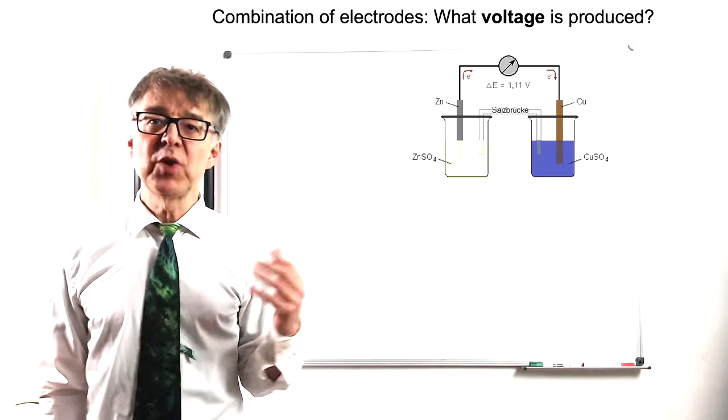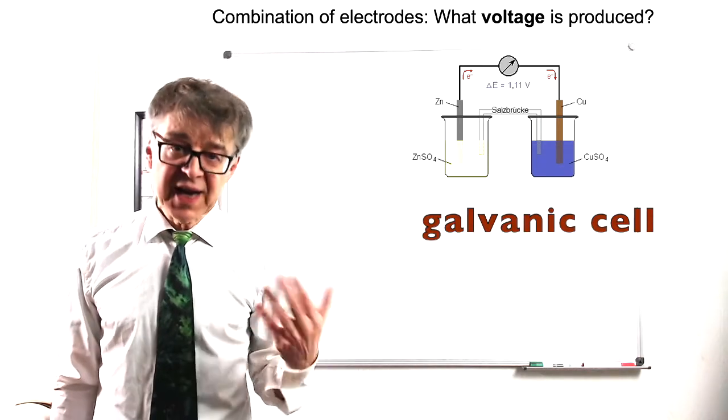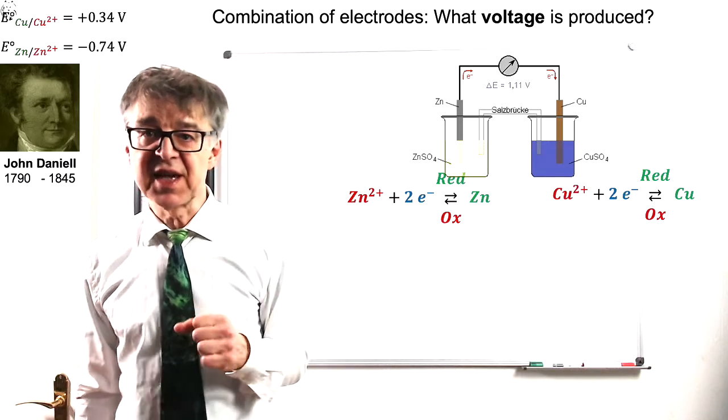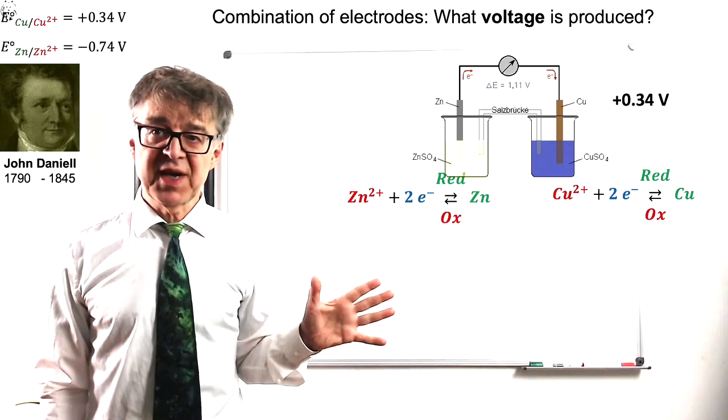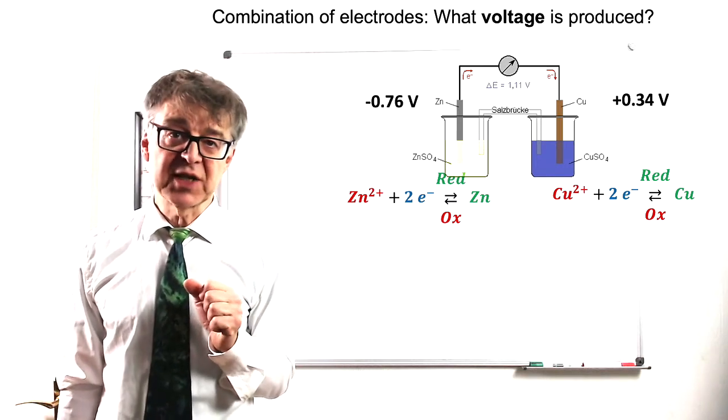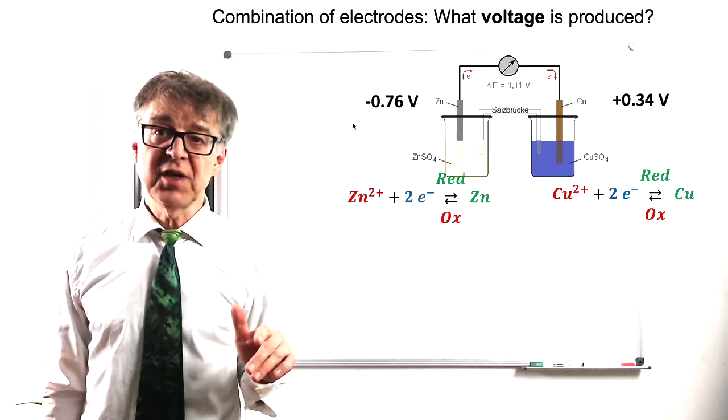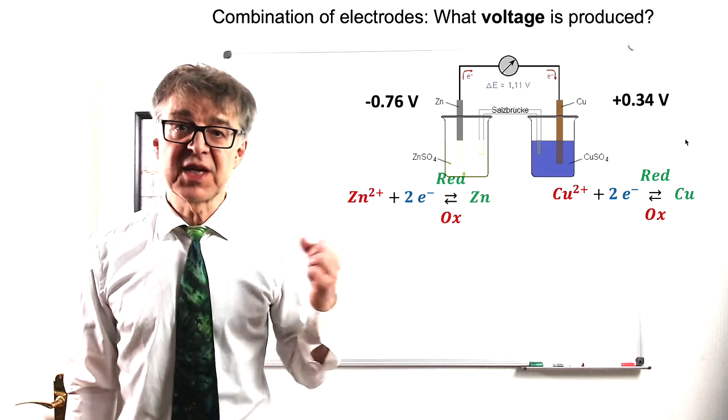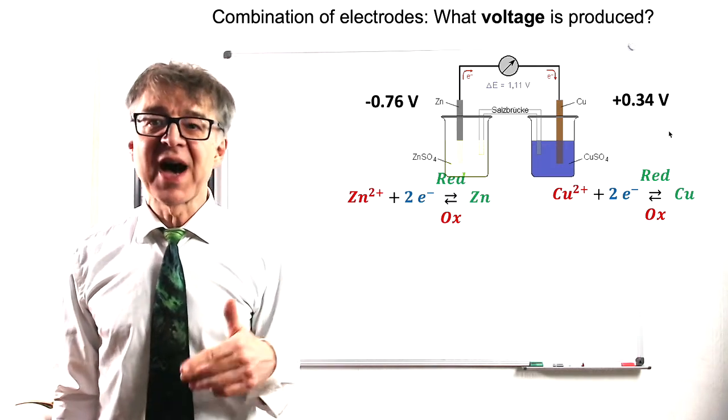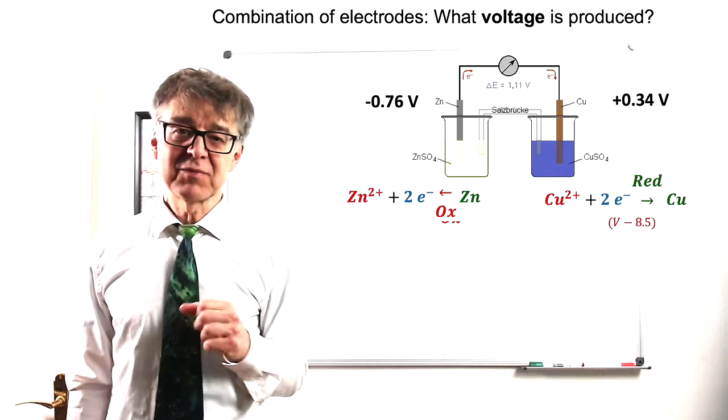We can combine any two electrodes to a galvanic cell or a battery. A classical battery is the Daniel cell. It consists of a copper and a zinc electrode. We formulate the electrode reactions of both electrodes and calculate their potential according to the Nernst equation. The electrode with the lower potential is the anode, here the oxidation takes place, an ox. The electrode with the higher potential is the cathode, here the reduction takes place, red cat.